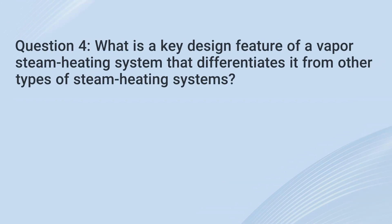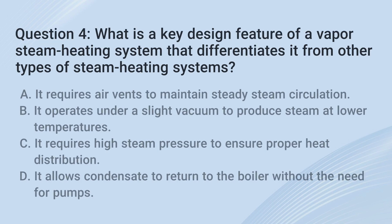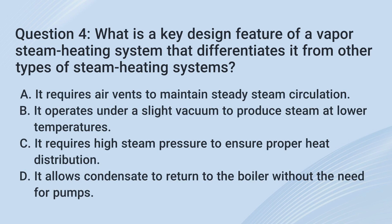Question 4. What is a key design feature of a vapor steam heating system that differentiates it from other types of steam heating systems? A. It requires air vents to maintain steady steam circulation. B. It operates under a slight vacuum to produce steam at lower temperatures. C. It requires high steam pressure to ensure proper heat distribution.